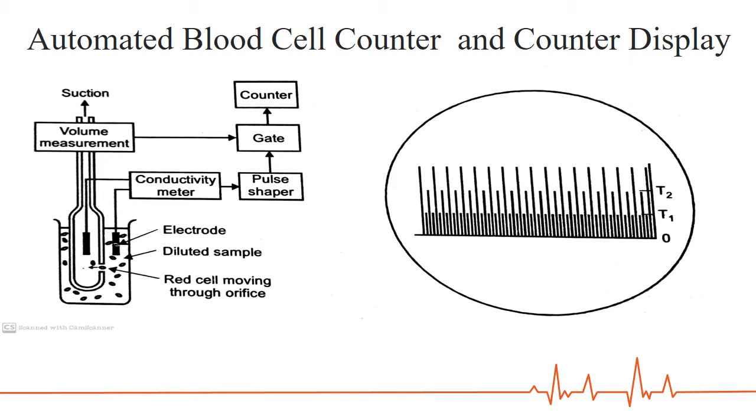The method is based on the fact that red cells have higher electrical resistivity than the saline solution in which they are suspended. Here, we will be able to see the automatic blood cell counter using an electronic circuitry. A diluted blood sample is drawn through a small orifice having diameter less than 100 micrometers by means of a suction pump.